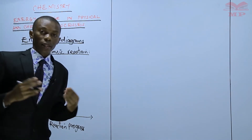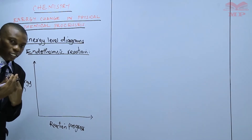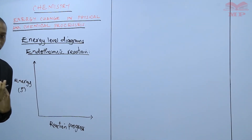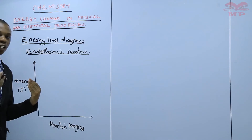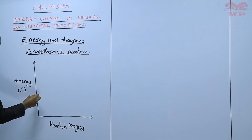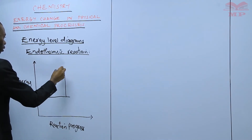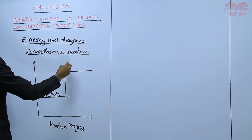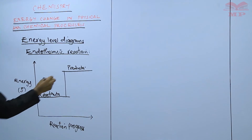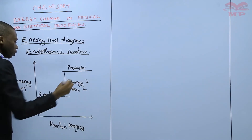At the beginning of the experiment, we have the reactants alone, and then energy is gained from the surrounding. When you gain energy, the amount of energy increases. So we expect that the reactants will be at a lower energy compared to the products. These are the reactants, and these are the products, showing that energy is taken in.